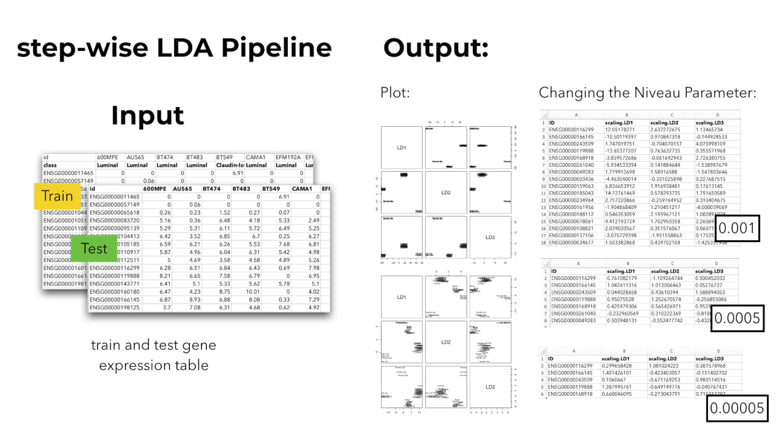At each step, each feature that is not already in the model is tested for inclusion in the model. The most significant of these features is added to the model, so long as its p-value is below some of the preset levels. For instance, this could be 0.05. This cutoff threshold is set by the Nouveau parameter.